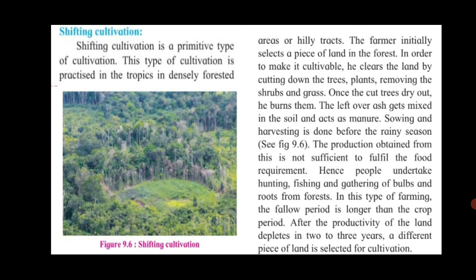Shifting cultivation is a primitive type of cultivation practiced in the tropics in densely forested areas or hilly tracts. The farmer initially selects a piece of land in the forest, clears it by cutting down trees, removing shrubs and grass. Once the cut trees dry out, he burns them. The leftover ash gets mixed in the soil and acts as manure. Sowing and harvesting is done before the rainy season, as shown in figure 9.6. The production obtained is not sufficient to fulfill food requirements, so people undertake hunting, fishing and gathering from forests. The fallow period is longer than the crop period. After productivity depletes in 2 or 3 years, a different piece of land is selected — that is why it is called shifting cultivation.